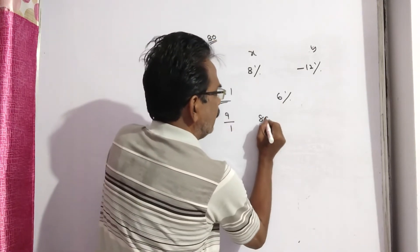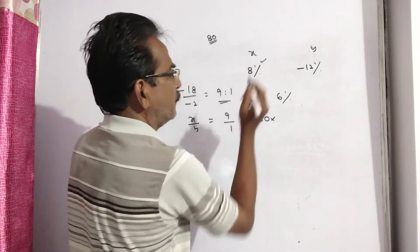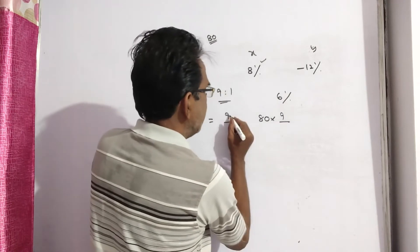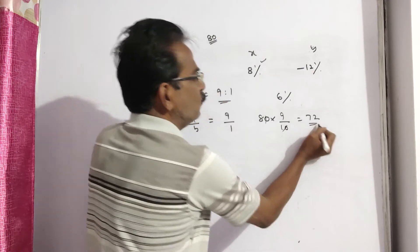Now, total 80 articles. We want the number of articles sold at 8% profit. So 9 by 10 into 80 is 72 articles.